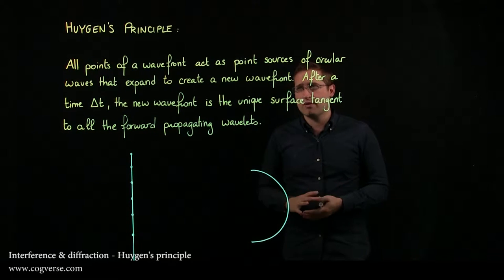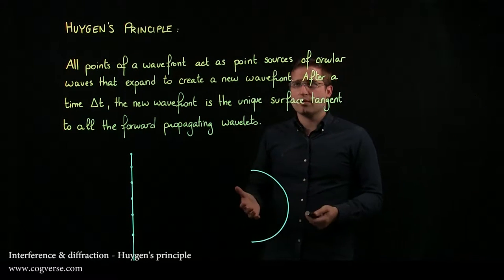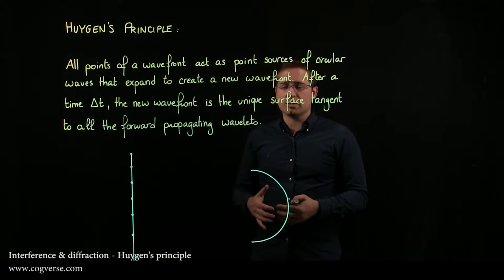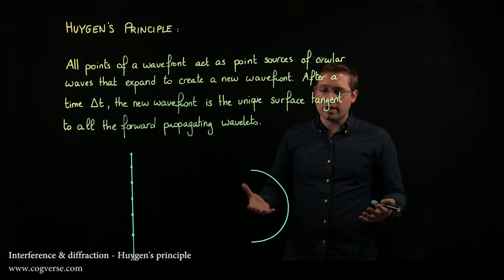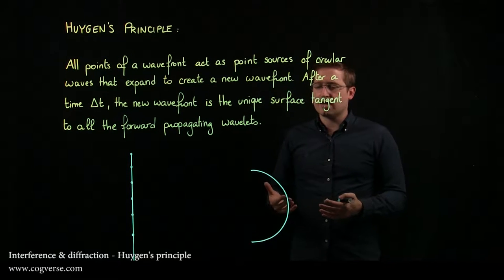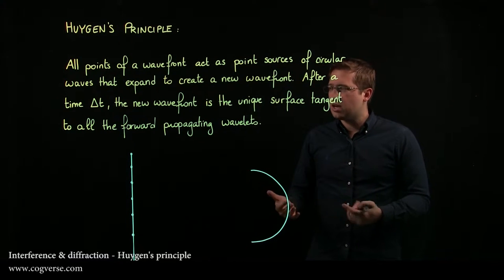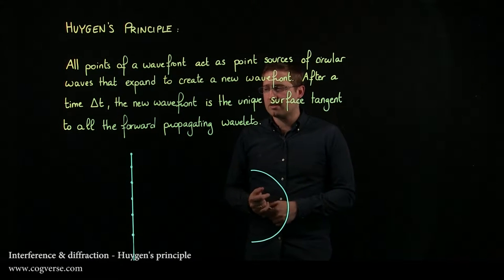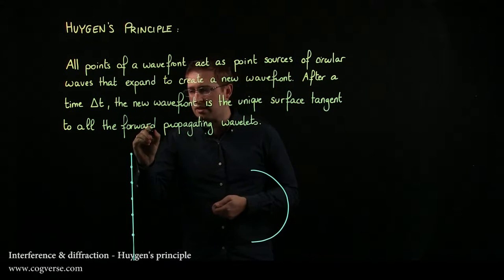It says that all points of a wavefront act as a point source for circular waves that are going to expand and create the new wavefront. The way that you find the new wavefront is by taking the unique surface tangent to all the forward propagating wavelets, and forward propagating is the key.